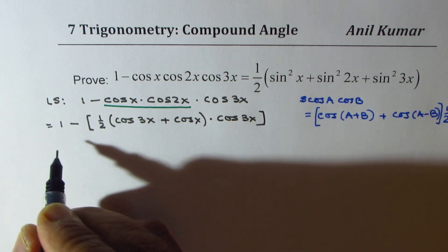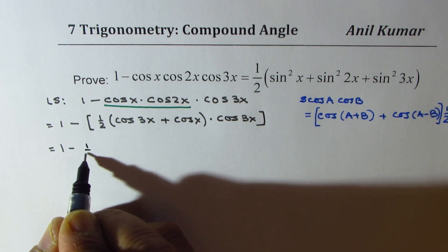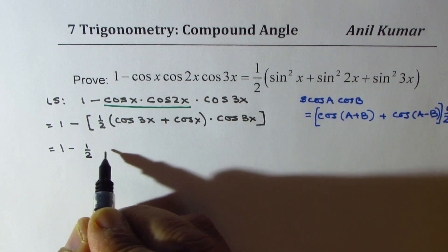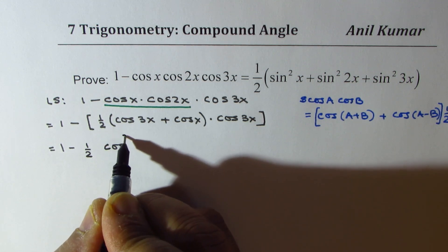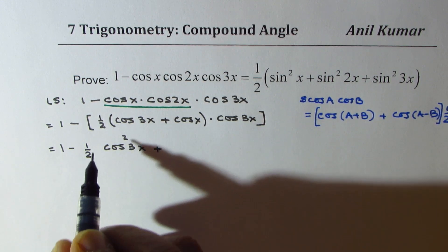We get 1 minus half cos square 3x plus. Okay. So, let's keep half outside.